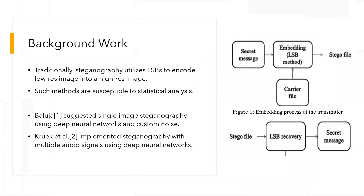Traditionally, steganography utilizes the least significant bit to add the secret image to the cover image. This introduces susceptibility, via which many statistical analyses can be done to retrieve the secret images easily, which is a flaw for us. Therefore, we introduce deep learning as a technique where we can add noise to the concatenated secret and cover images.